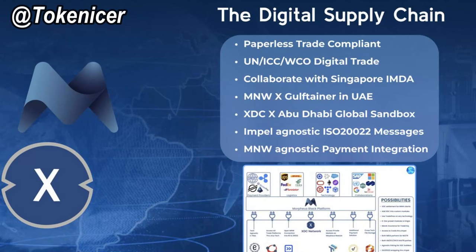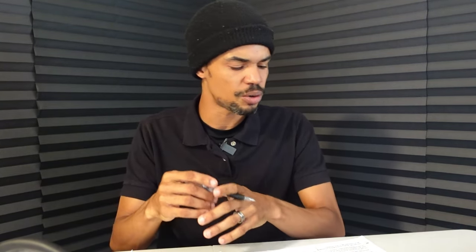I read an interesting post on social media that put the Morpheus Network right next to XDC. That's very interesting because Morpheus has a market in the US, and through their banking partnerships they could give them some leverage with G7 nations. I would be interested in doing a comparison between XDC and Morpheus Network.